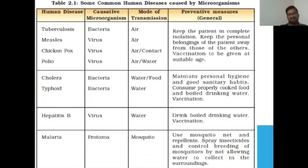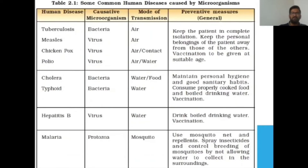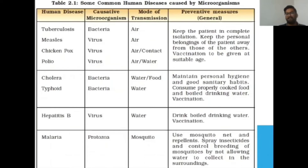Malaria is caused by protozoa and transmitted through mosquitoes. To prevent malaria, use mosquito nets, spray insecticides, and control the breeding of mosquitoes by not allowing water to collect in the surrounding area.